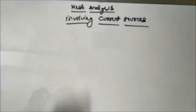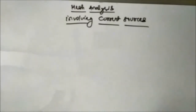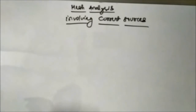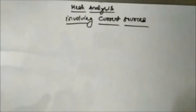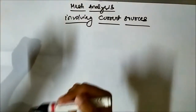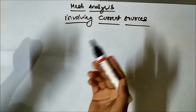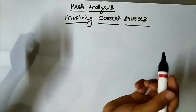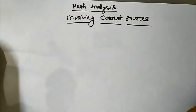What we are trying to say is that whenever a current source is involved in a circuit network, how are we going to deal with it using the concept of mesh analysis to determine the required parameters — normally current is asked in mesh analysis. Whenever you come across any circuit involving current sources, it must be in one of the following two types.